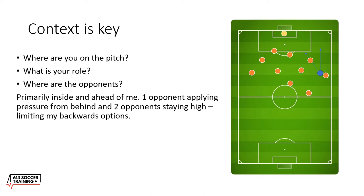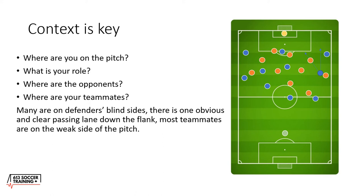Where are the opponents? They're primarily inside and ahead of me. I have one opponent applying pressure from behind and two opponents staying high, limiting my backwards options. If I were to play the ball back to a central defender, I'd have to play it through those players, or wait for a midfielder to show inside. Either way, it looks like I'm going to have to break lines.